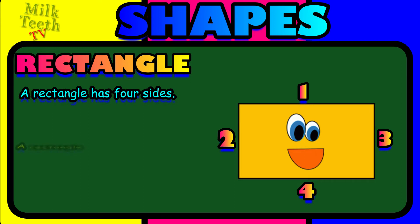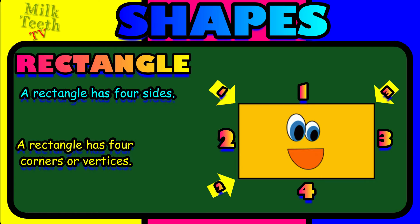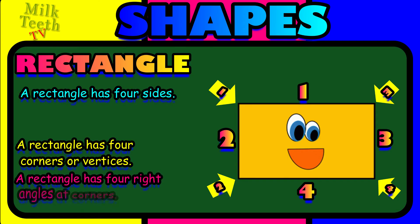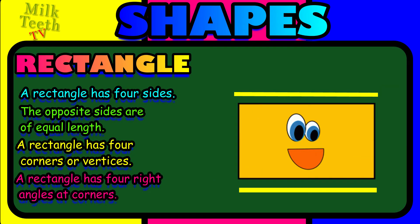A rectangle has four corners or vertices: one, two, three, four. A rectangle has four right angles at the corners like a square. But the opposite sides in a rectangle are of equal length — not all four sides are equal.